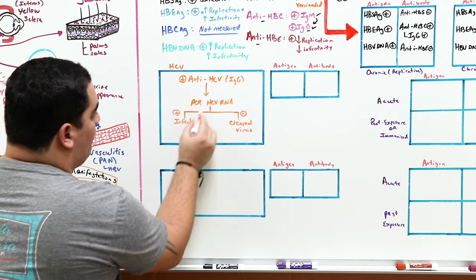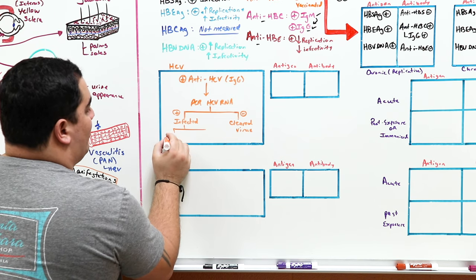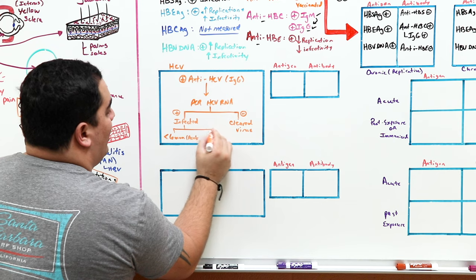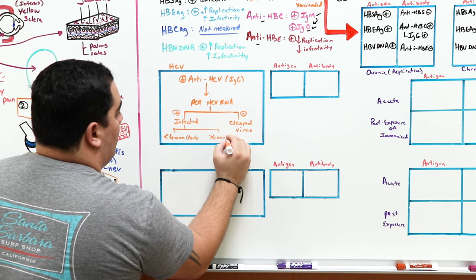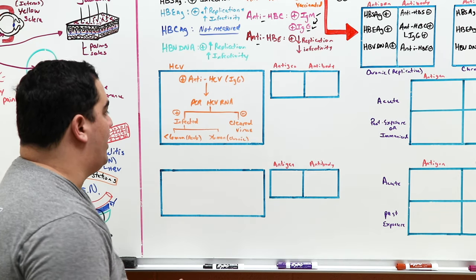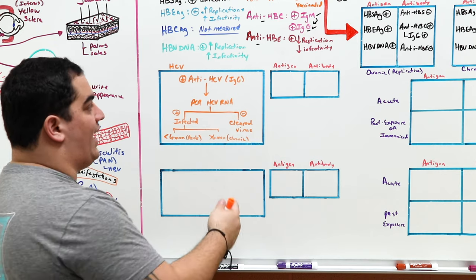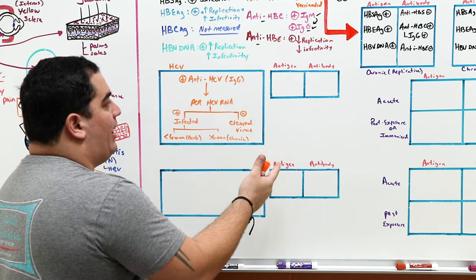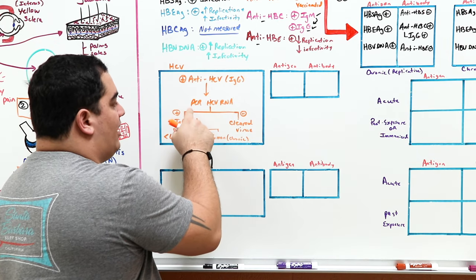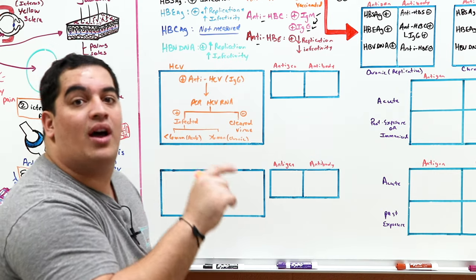Once you've confirmed HCV RNA is positive, you need to determine how long it has been positive. If it's been positive for less than six months, this is an acute infection. If it's been positive for greater than six months, it is a chronic infection. So the algorithm is: check Anti-HCV IgG antibodies → confirm with HCV RNA PCR → determine duration to classify as acute or chronic.